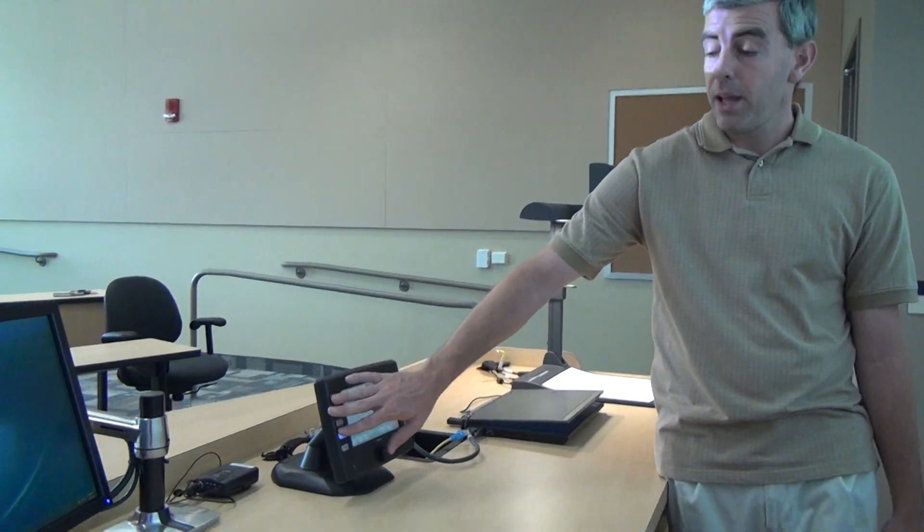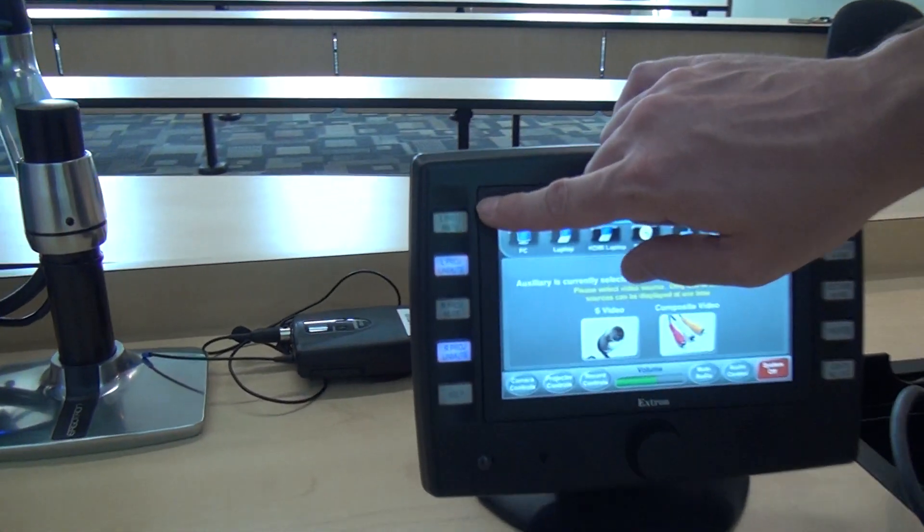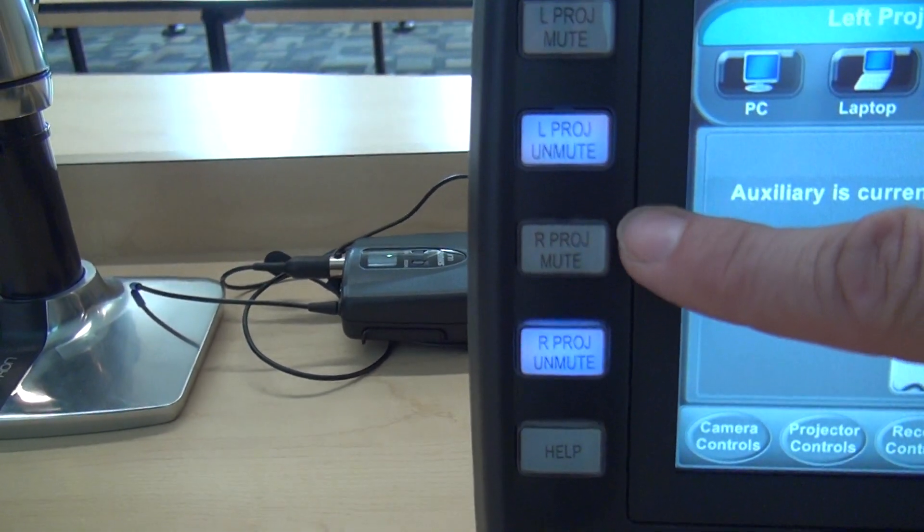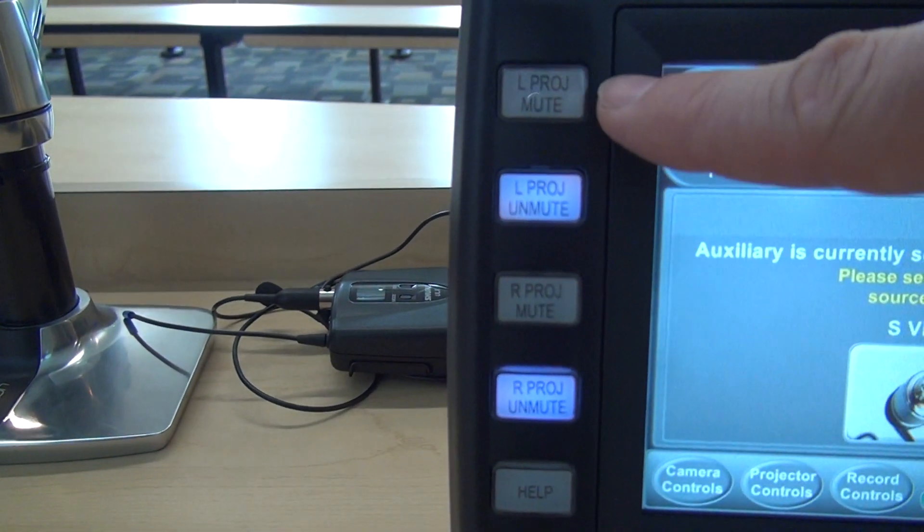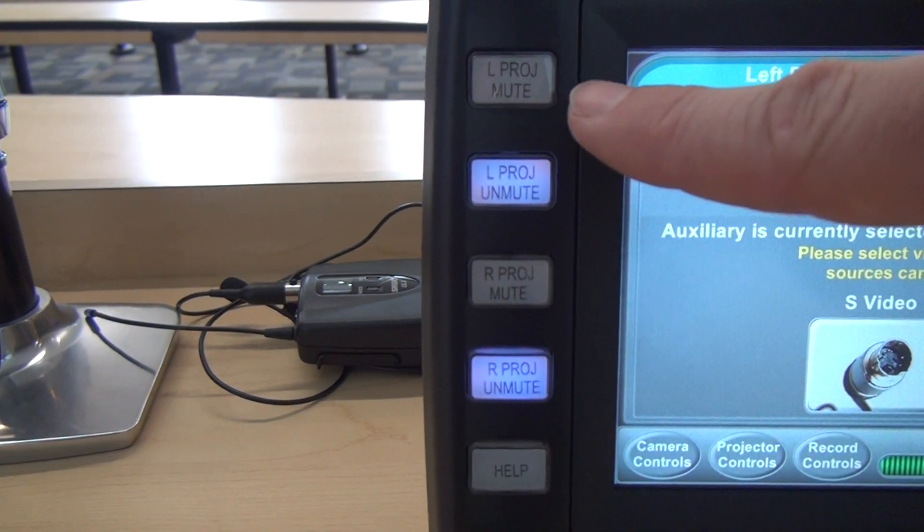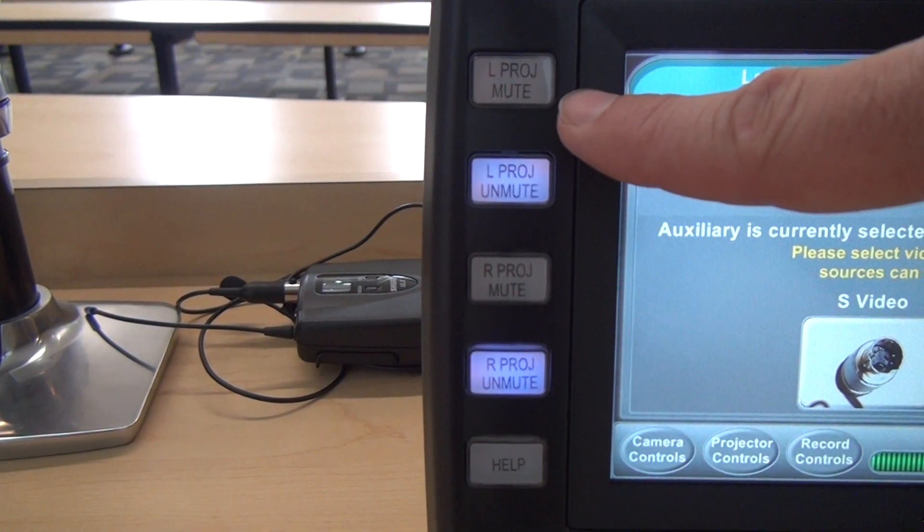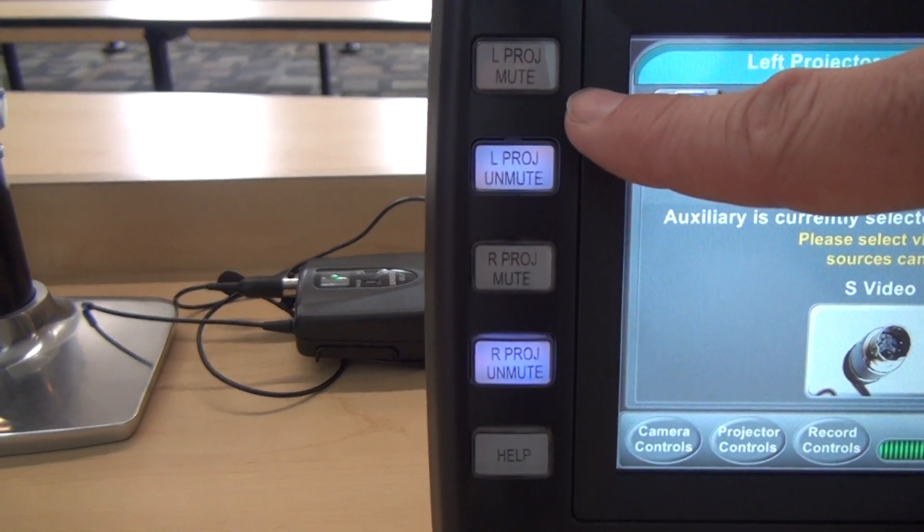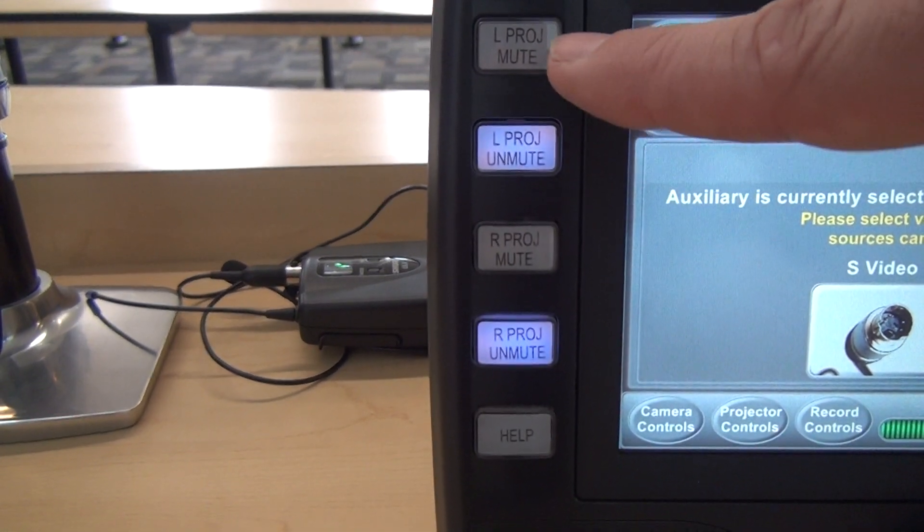On the left hand side of our touch panel we have a couple of nice little features: we have the left projector mute and unmute and the right projector mute and unmute. And the left projector mute, what's going to happen when I hit that button is not only is the projector going to mute the video or send a black screen up there without powering down, but it's also going to raise the screen.